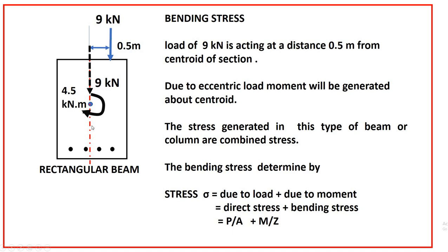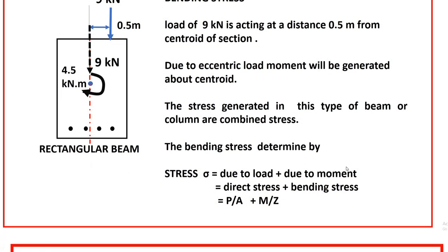So combined stress is generated here. The stress due to the 9 kilonewtons is the direct stress, and the stress due to the moment is the bending stress. The total stress is the combination: stress due to load plus stress due to moment, that is, direct stress plus bending stress. Direct stress = load divided by area, and bending stress = moment divided by section modulus.